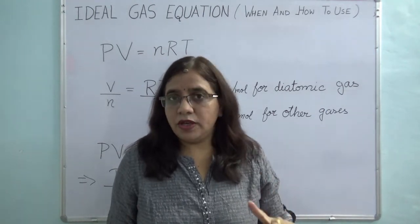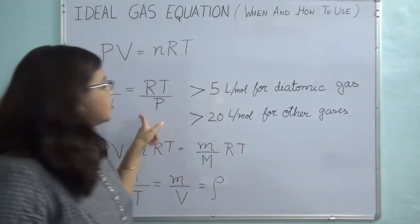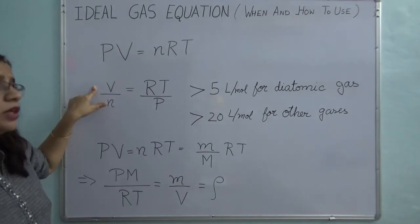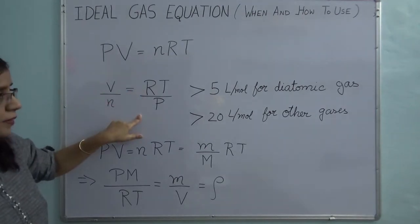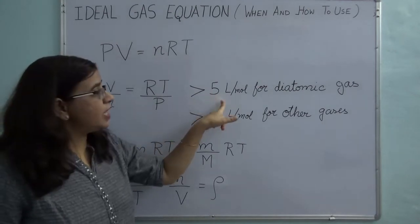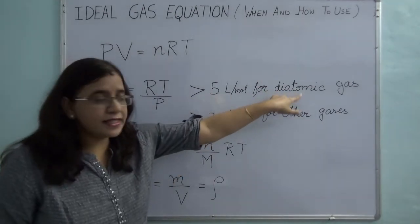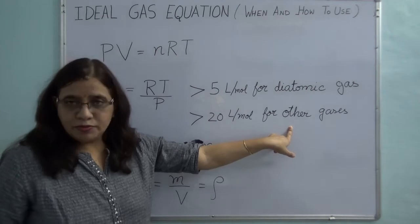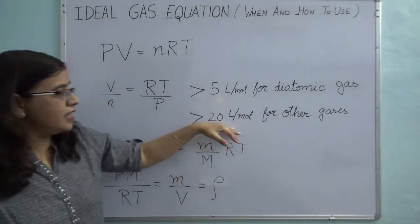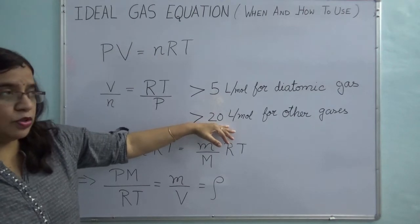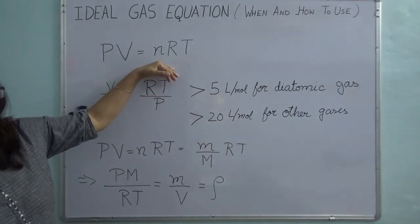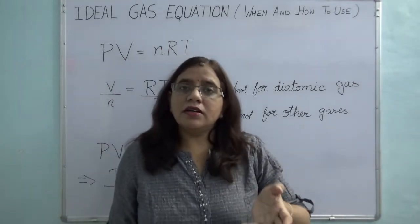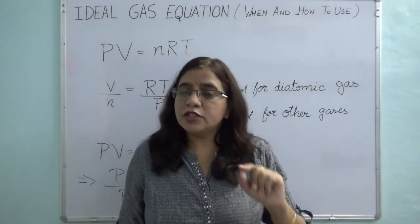A more rigorous treatment is given in Hougen and Watson where they provide this criteria: V/N, the specific molar volume equal to RT/P — if it is greater than 5 liters per mole for a diatomic gas, or greater than 20 liters per mole for other gases like ethane, butane, etc. If its value is above these limits, then whatever value you calculate carries very small error.